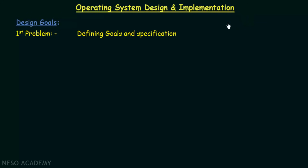Talking about the design goals, the first problem we face is defining the goals and specifications. This is a problem because it is not easy to specify all the goals and specifications needed for an operating system. Depending on the kind of users and system requirements, there may be different sets of requirements and goals.